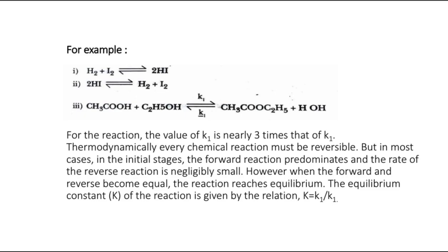Thermodynamically, every chemical reaction must be reversible. But in most cases, in the initial stage the forward reaction is so dominating that the rate of the reverse reaction is negligibly small. However, we can also have reactions where forward and reverse reactions proceed at equal rates, and thereby the reaction reaches equilibrium. We introduce a concept called the equilibrium constant K, defined as the ratio of the rate constant of the forward reaction to that of the reverse reaction: K = K1 / K-1.